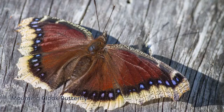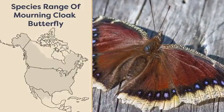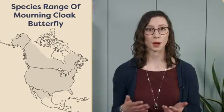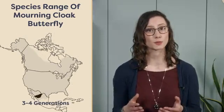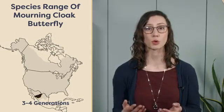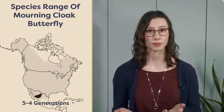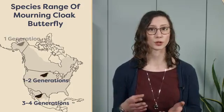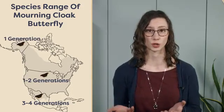Take, for example, the morning cloak butterfly. This species of butterfly has a broad geographical distribution that extends across North America and northern Eurasia. Populations of these butterflies in the southern part of the range are multivoltine, and typically produce up to four generations per year. Populations in the northern regions of its distribution, however, produce only one to two generations per year.